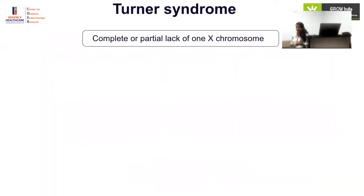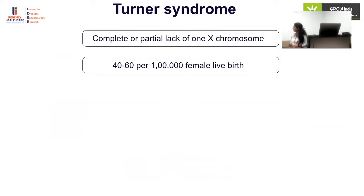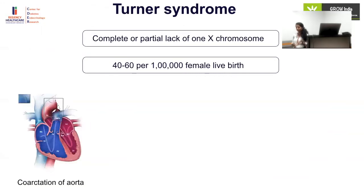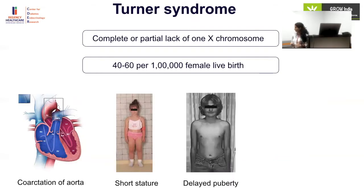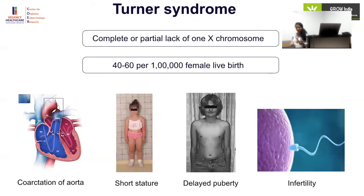Turner syndrome is a constellation of clinical features in a phenotypic female due to complete or partial loss of a sex chromosome. The incidence is 40 to 60 per 100,000 live female births. Major phenotypic features include cardiac abnormalities in the neonatal or infantile period, left-sided obstruction, short stature in childhood, delayed puberty, and infertility in adulthood. Presentation can occur from fetal period to adult life.